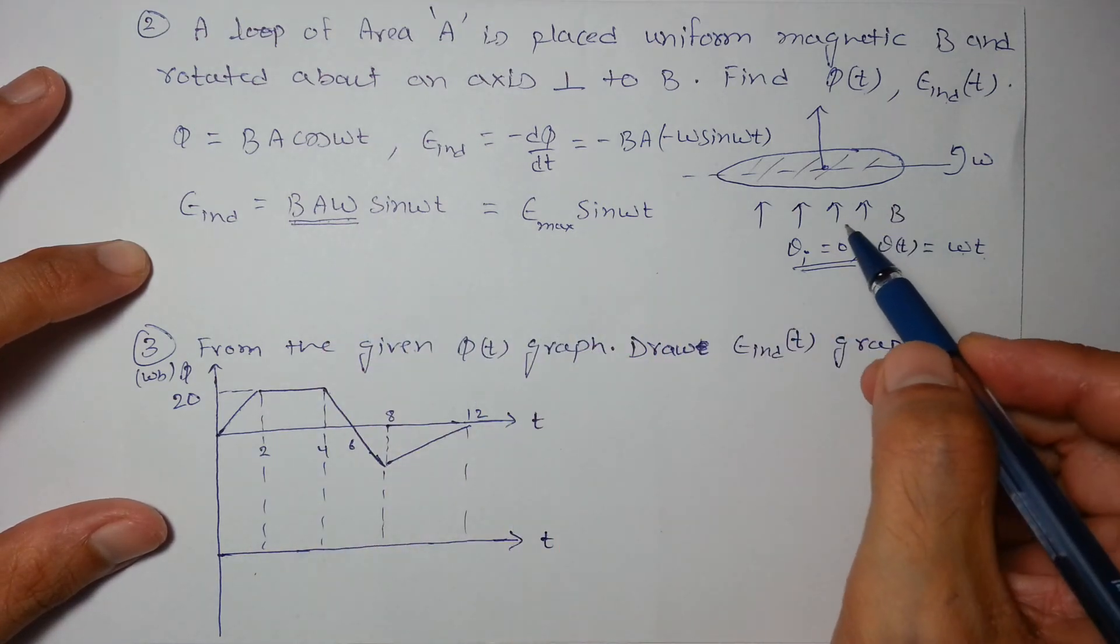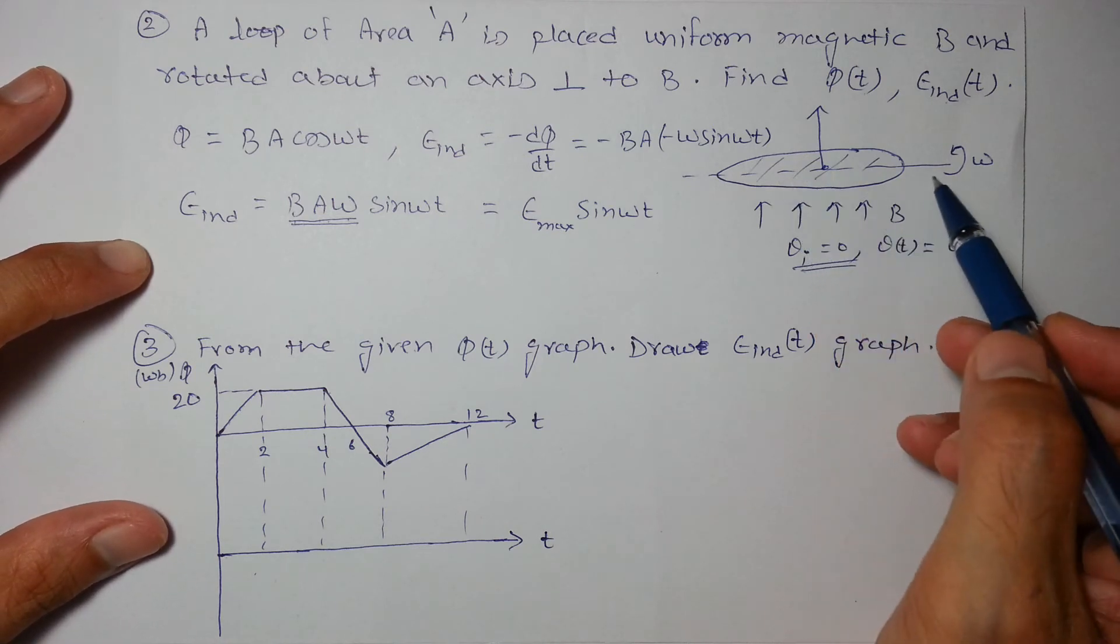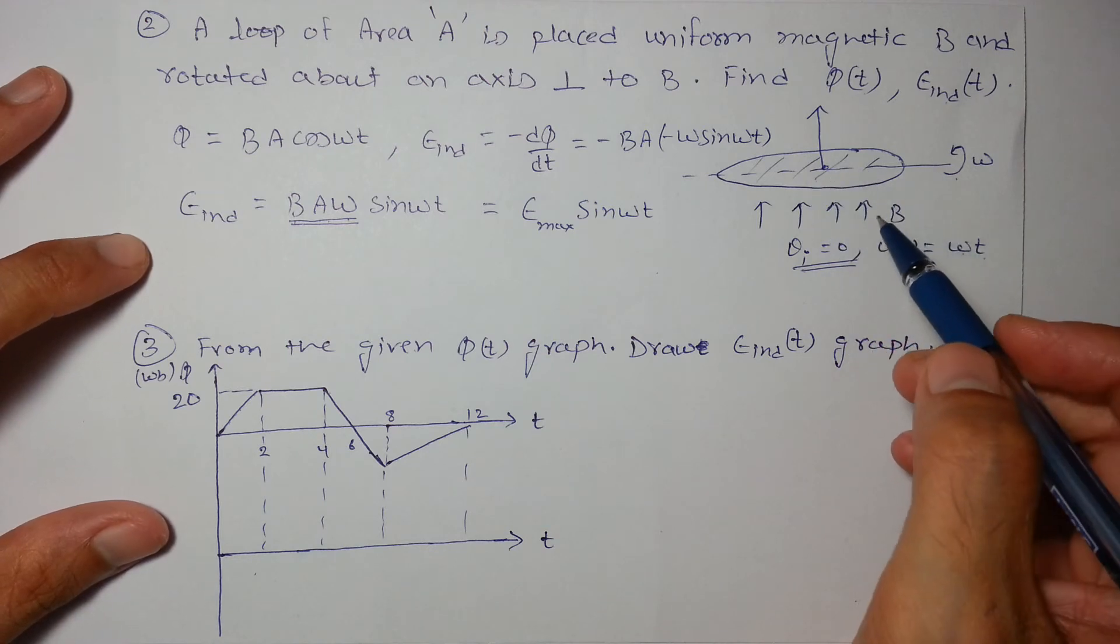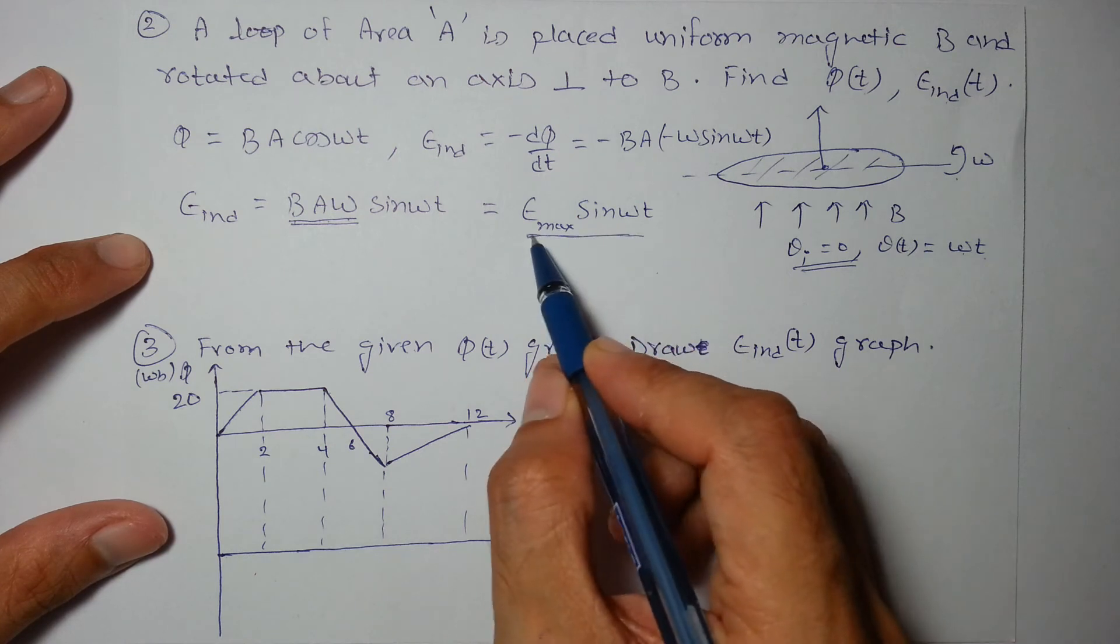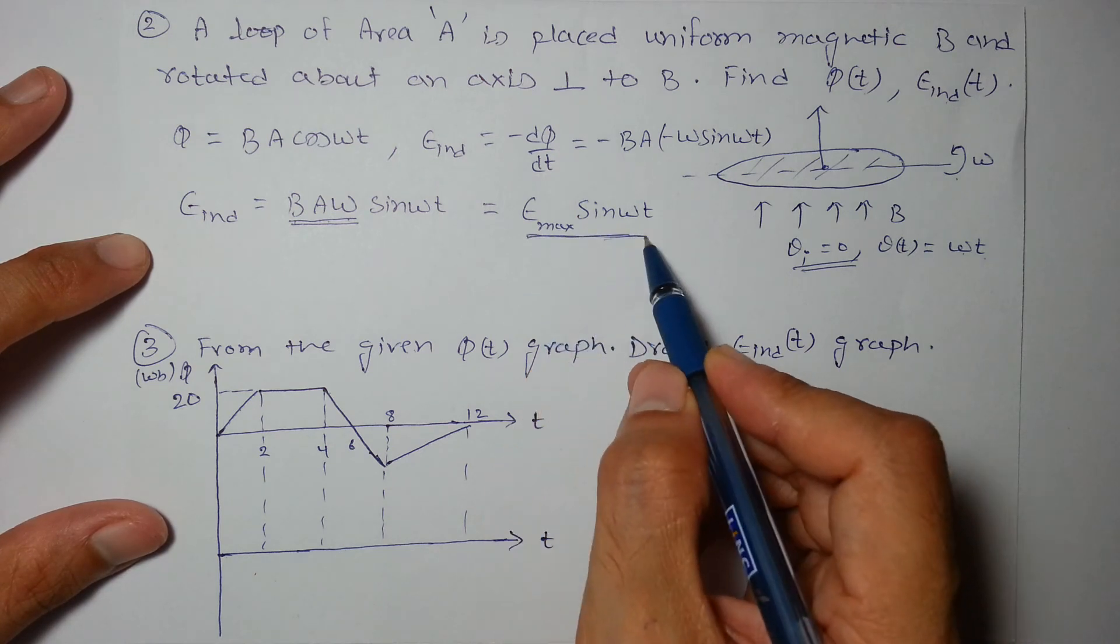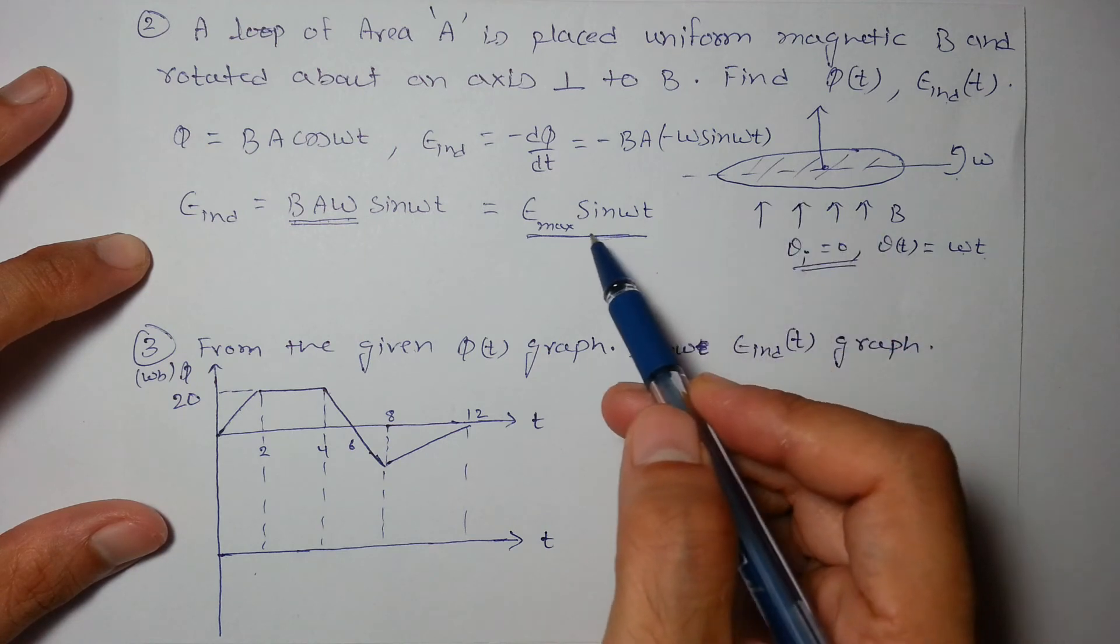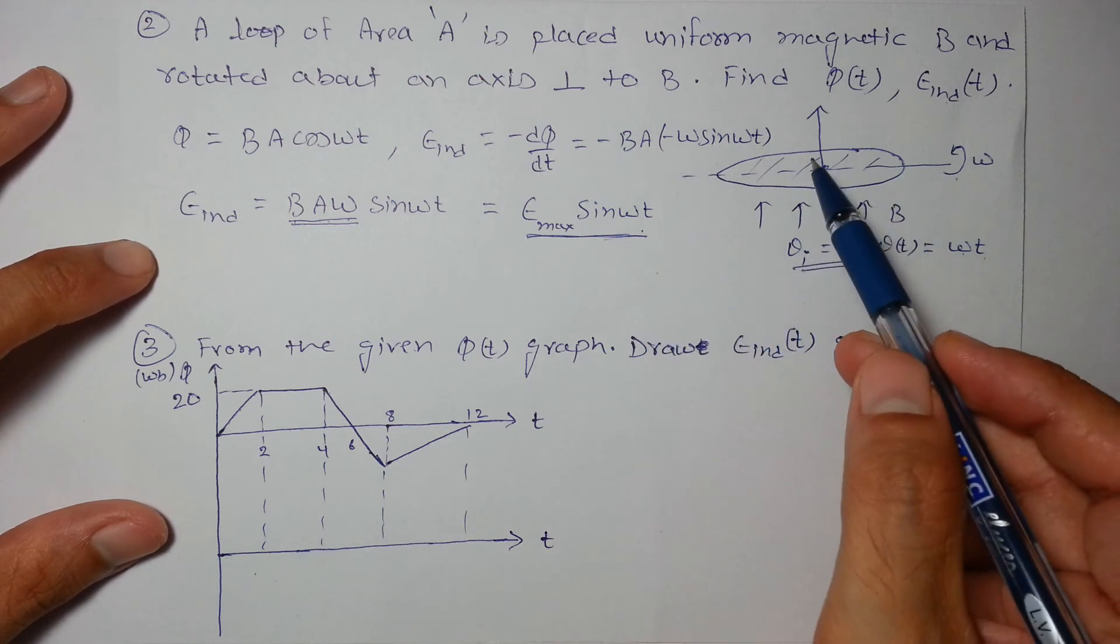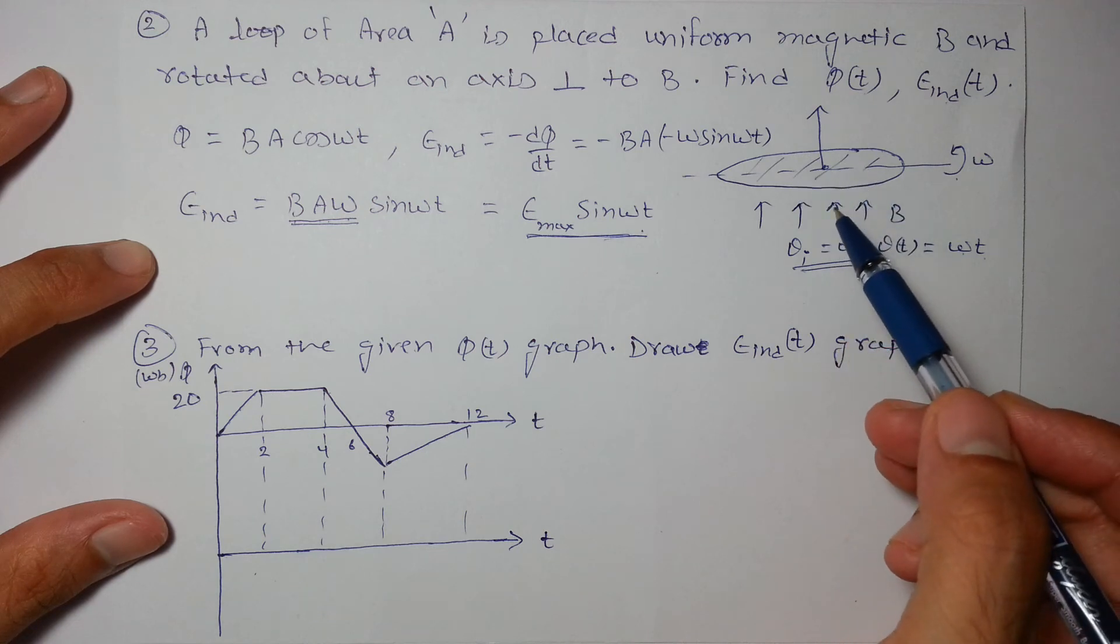So most of the household supply is generated by this method. We take a coil and rotate it in the presence of magnetic field. That's why we get this type of alternating EMF in our houses. That is the basic reason we get an alternating current or alternating EMF, because we generate it by the similar method: we rotate a coil in the presence of magnetic field.